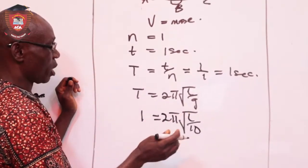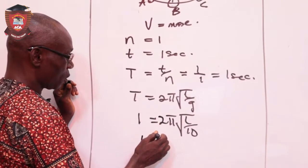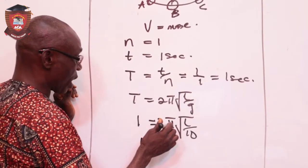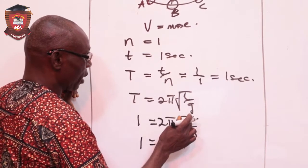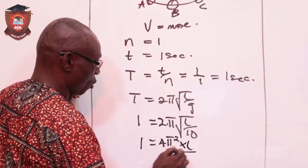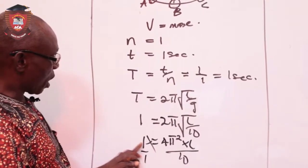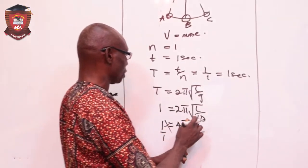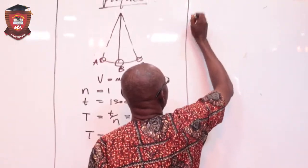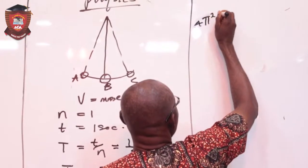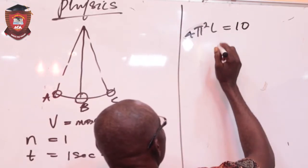This is 2 pi root L over 10. So, I can now square. If I square this, it is one. If I square two, it's four. Pi squared is also pi squared. The weight multiplied by length will now be L, all over 10. I will make this over on our cross multiply. One times 10 will give me 10. So, I have four pi squared L. 4 pi squared L is the same as 10.